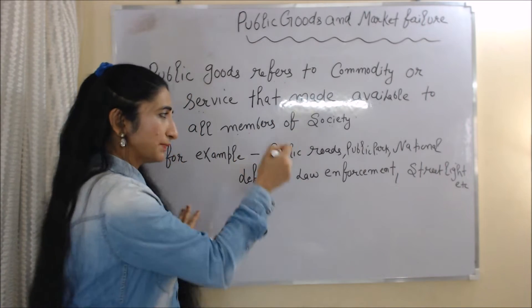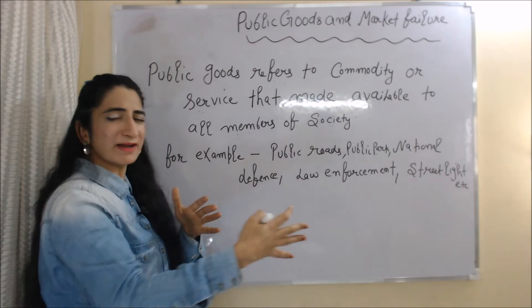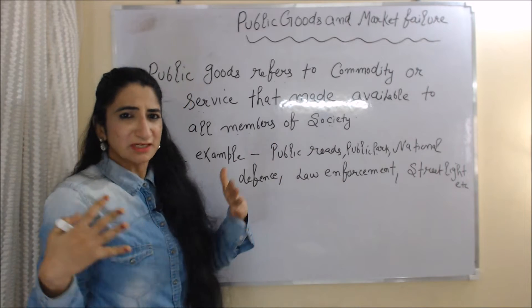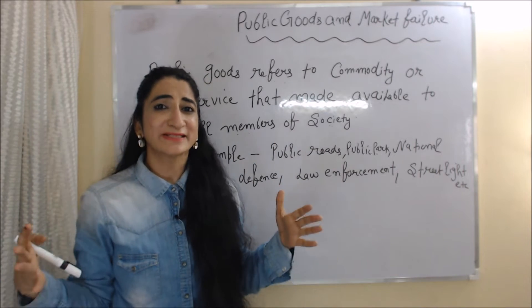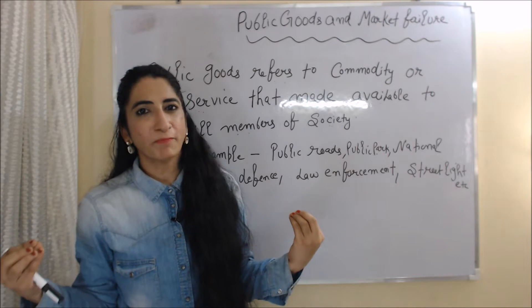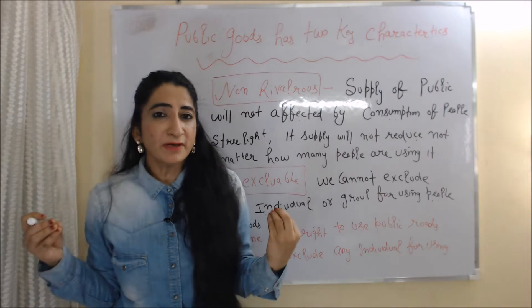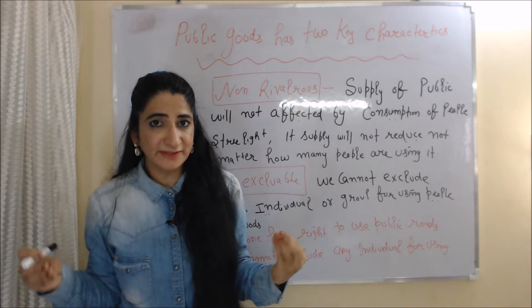For example, public roads, public parks, national defense, law enforcement, and street lights are examples of public goods. Public goods has two key characteristics: first is non-rivalries, and second is non-excludable.